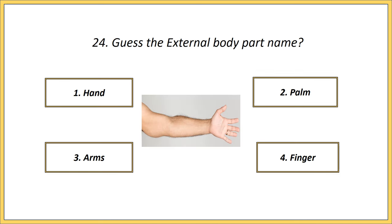Twenty-fourth question. Guess the external body part name. Options: hand, palm, arms, finger. Answer is arms.